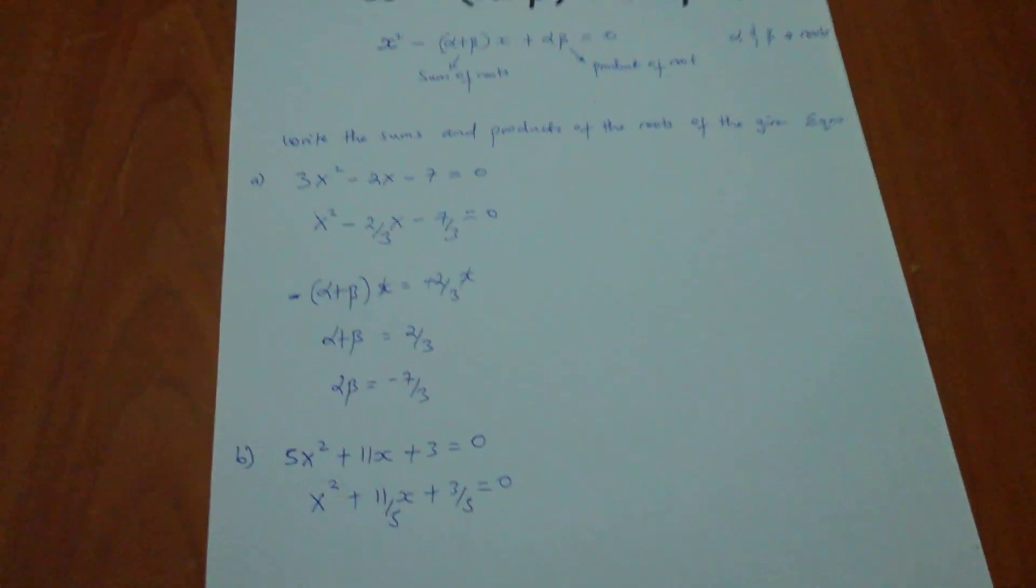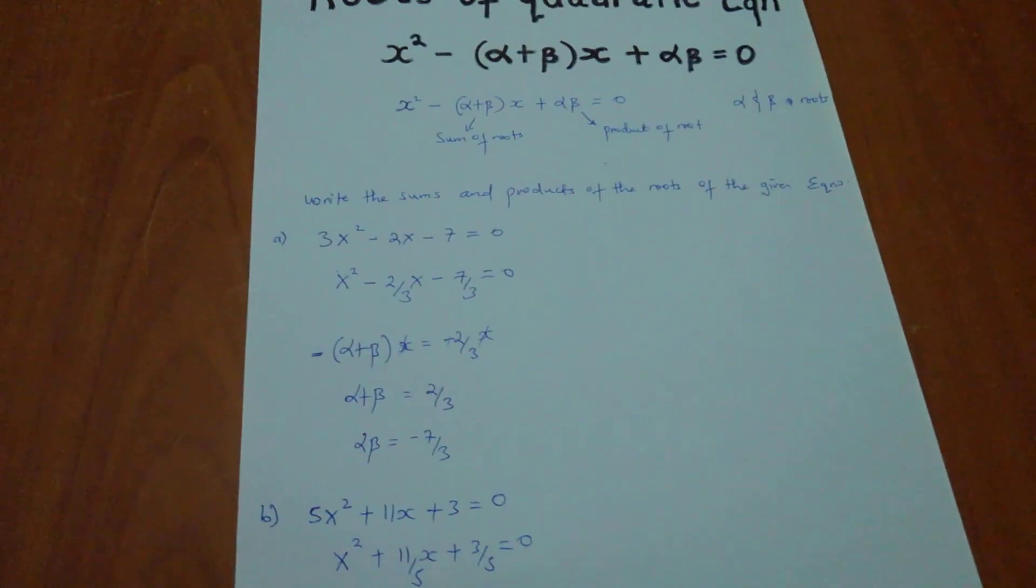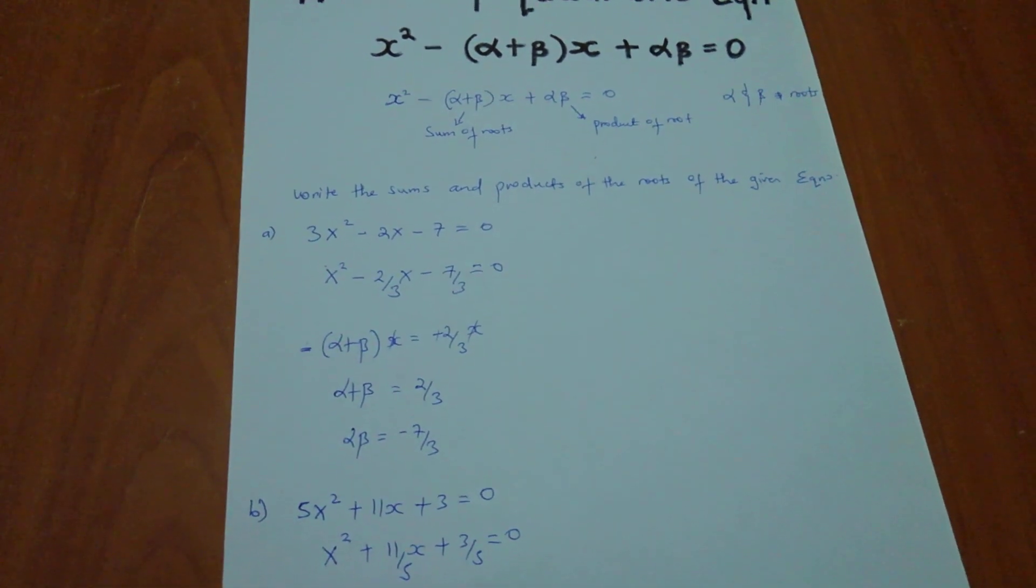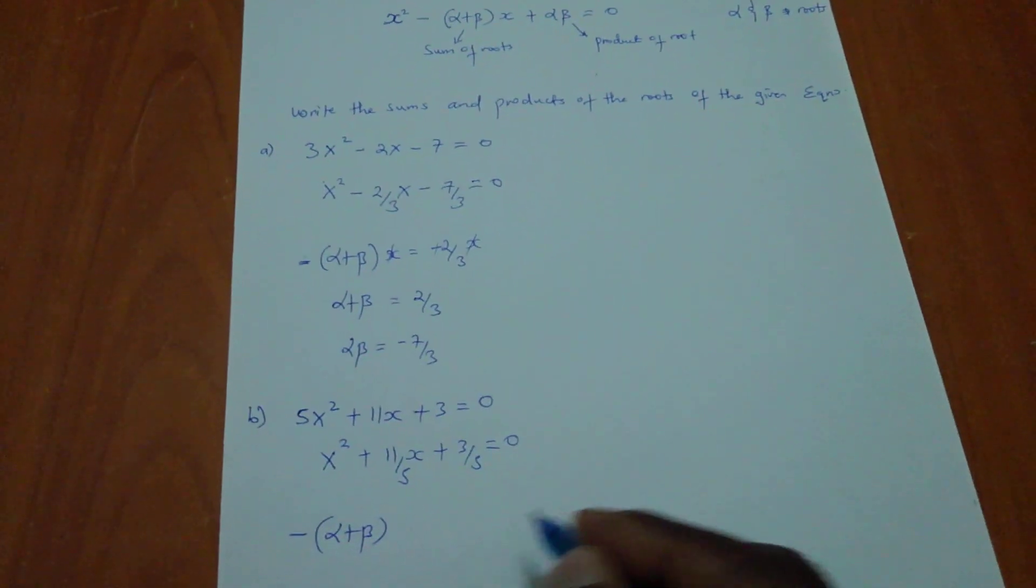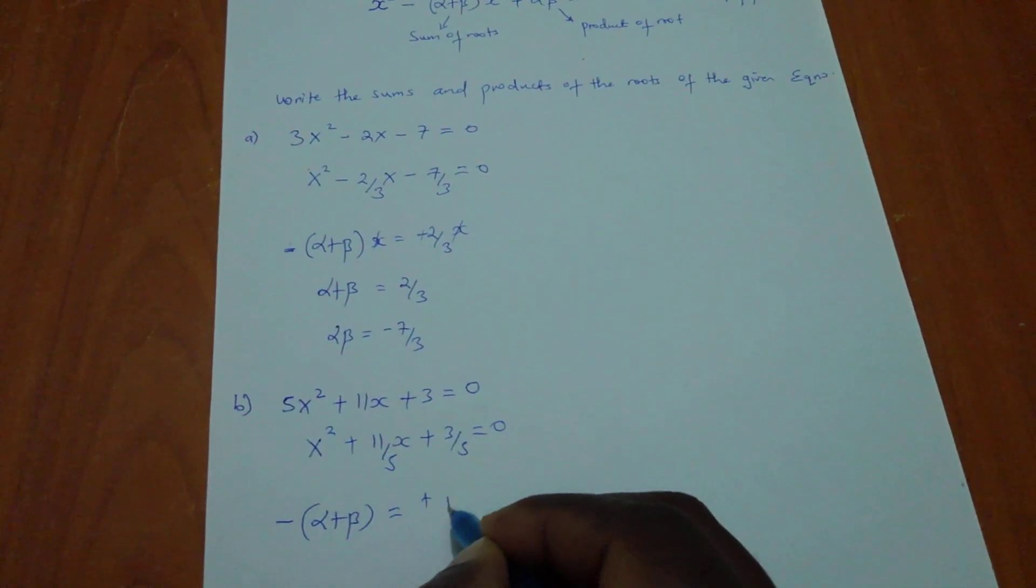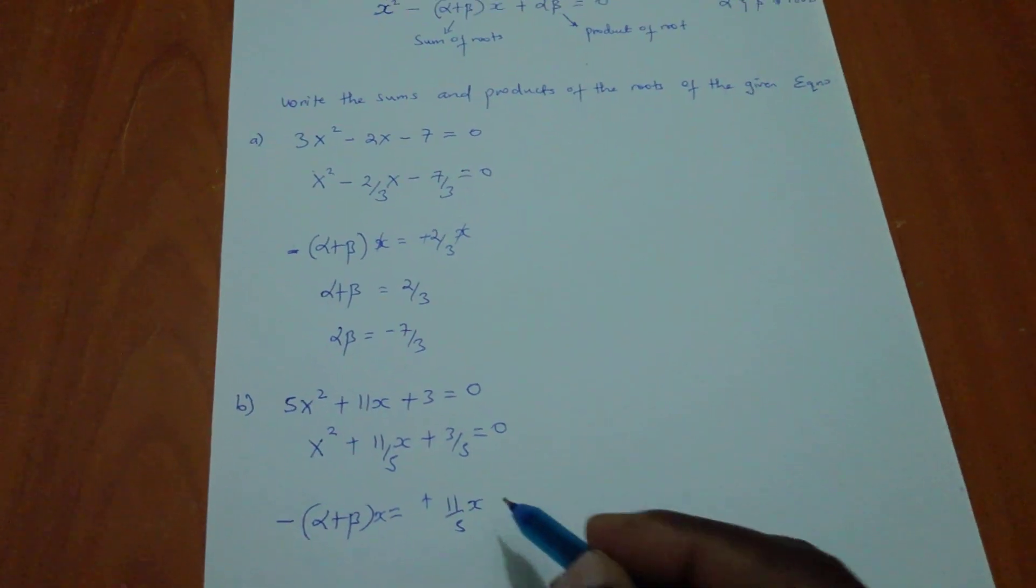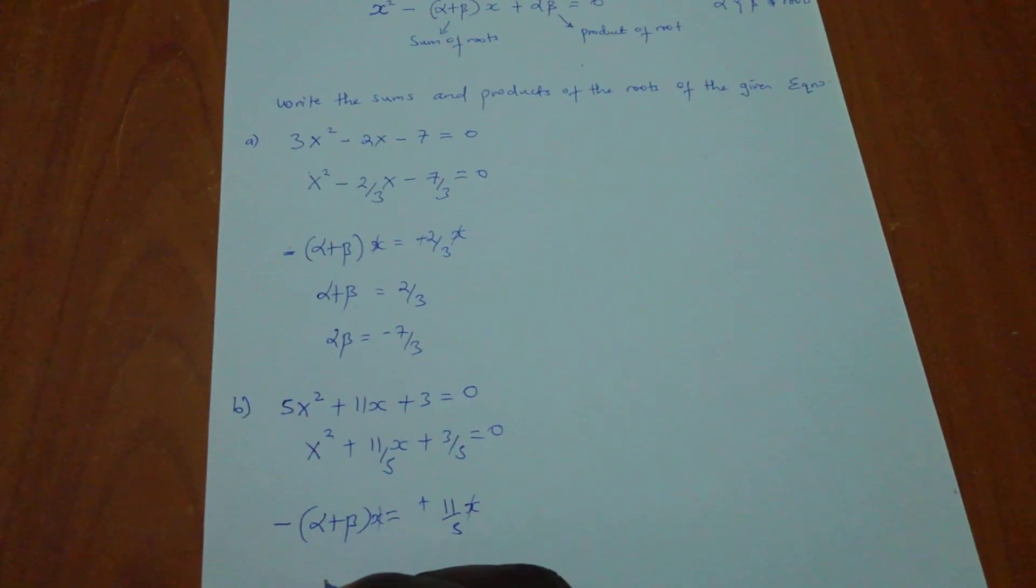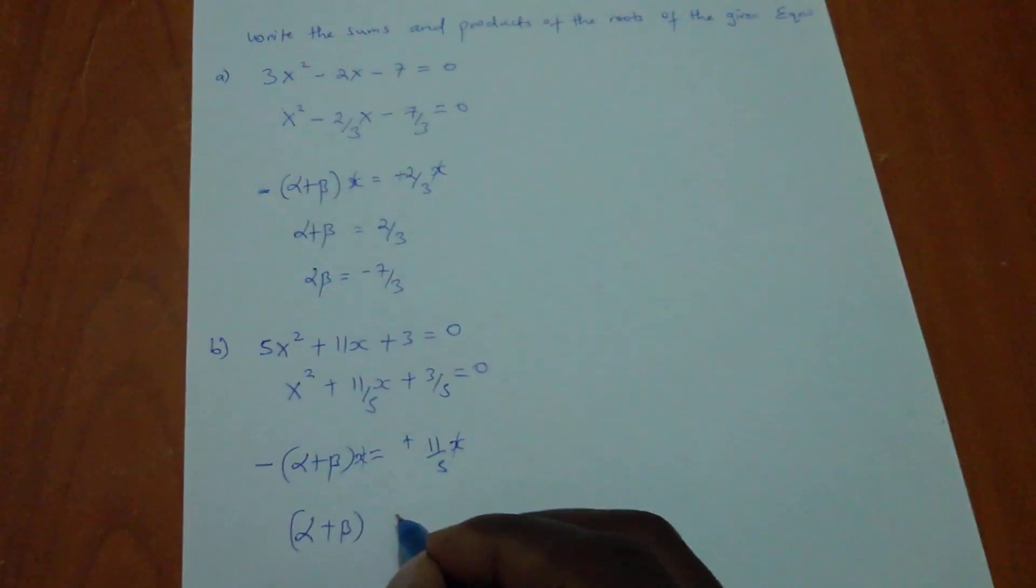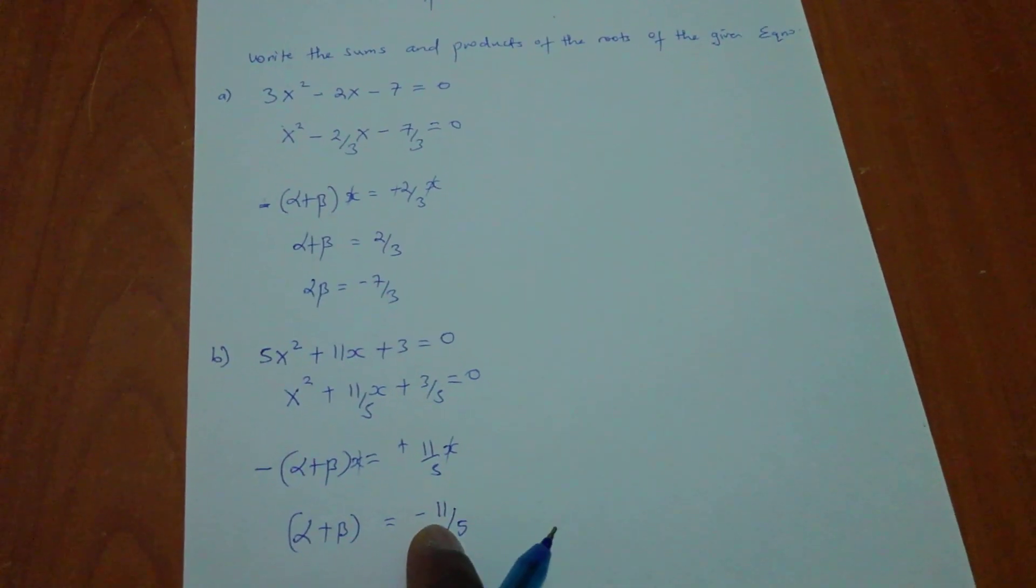Then I'm going to equate the original expression. I'll have negative alpha plus beta. I'm going to equate it to this, which is positive 11 over 5x. Remember, also here there is an x. All this will die. So if I divide by negative, the negative will go to the other side. And my alpha beta will be negative 11 over 5. So this is the sum of the roots.